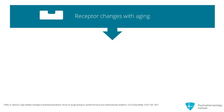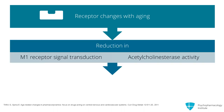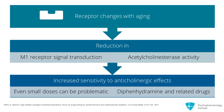Certain receptor changes with aging have been identified. For example, muscarinic M1 receptor signal transduction is reduced, and acetylcholinesterase enzyme activity is reduced. These changes make elders sensitive to the adverse effects of anticholinergic drugs, such that even small doses can be problematic. Note that there is a case against diphenhydramine and related drugs in this population.